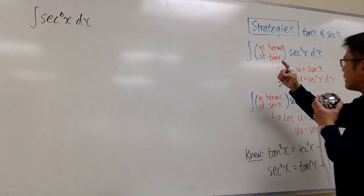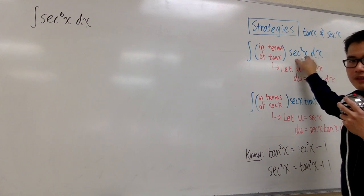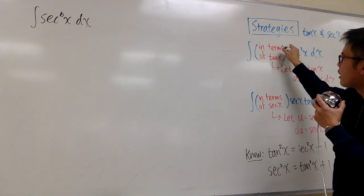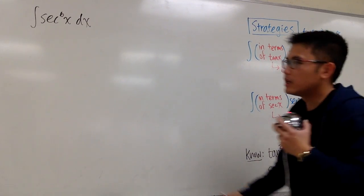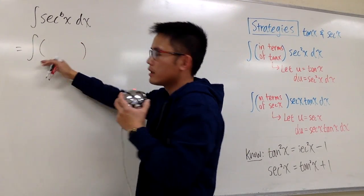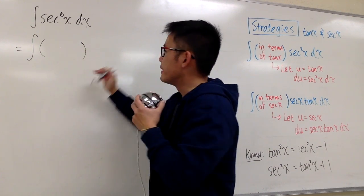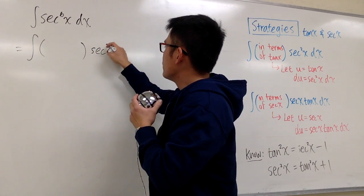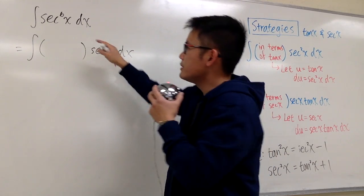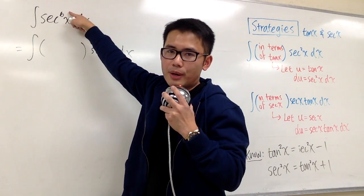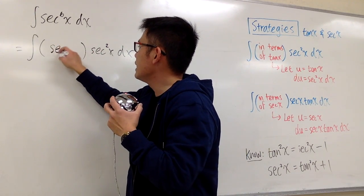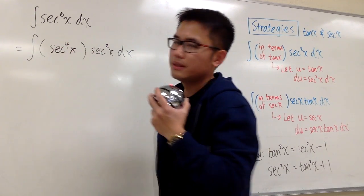So I would like to begin by pulling out two of the secant on the side, and then let's see if we can write the first part in terms of tangent x. Right here, this will be the integral. Let's look at the first part in terms of the parentheses for now, but then I want to have secant to the 2nd power x dx on the side. Well, originally we have to the 6th power, we took two of them out, we will just have secant to the 4th power x.